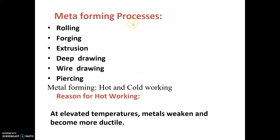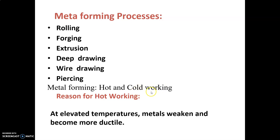Metal forming processes include rolling, forging, extrusion, deep drawing, wire drawing, and piercing. They are classified into hot working and cold working. In hot working, metal is heated above the recrystallization temperature — at elevated temperatures, metals become weaker and more ductile, which is used for working. Some metals with low recrystallization temperatures can be cold worked without heating.